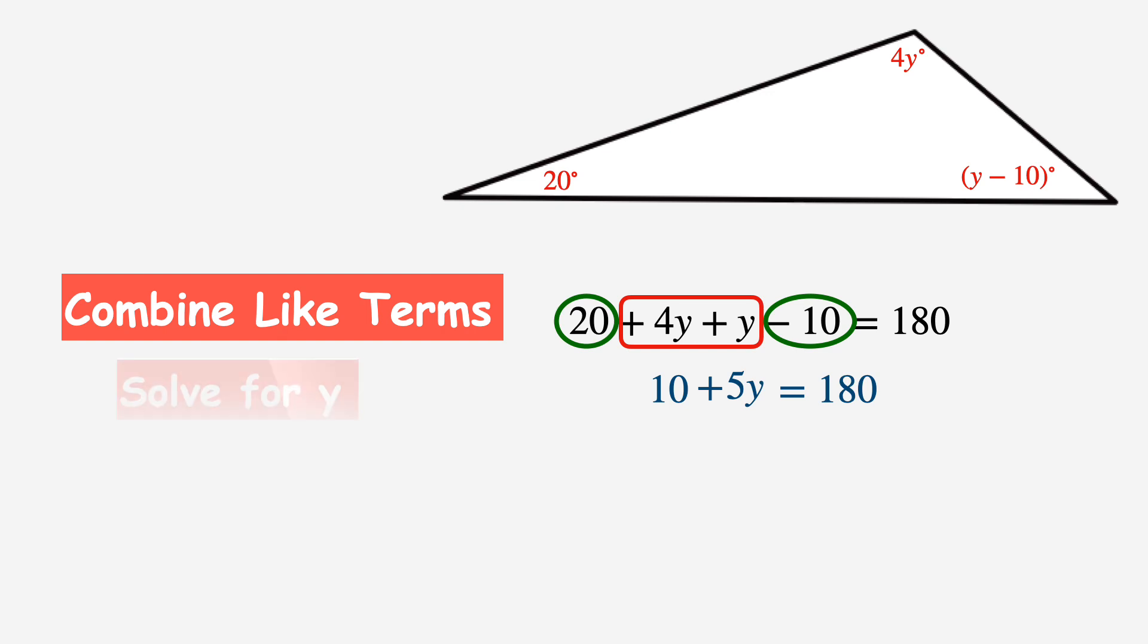Now I can solve for y. The first thing I want to do here is to remove the positive 10 from the left side of this equation by subtracting 10. And to keep the equation balanced, I need to subtract 10 on the right side as well. Looking back at the left side, positive 10 and negative 10 create a zero pair, so they just cancel each other out, leaving just the 5y.